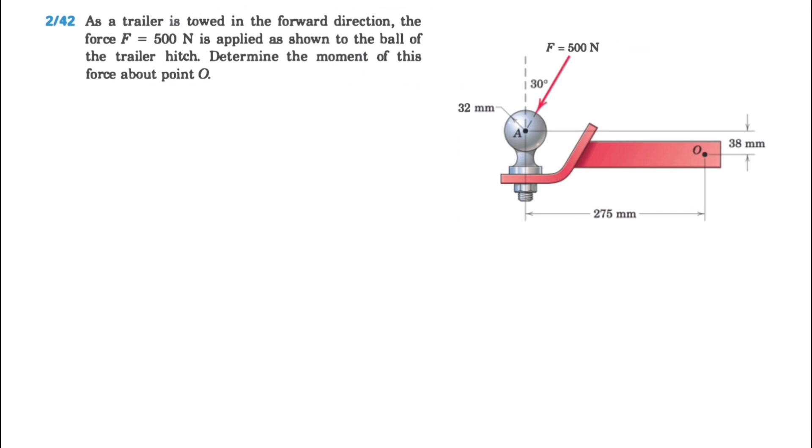Welcome back. We're going to be solving question 42 from the second chapter of the Merriam textbook. We have a trailer that is towed in the forward direction. The force F, which is 500 Newtons, is applied as shown to the ball of the trailer hitch. We need to determine the moment of this force about point O.